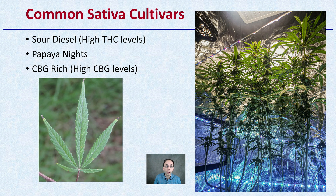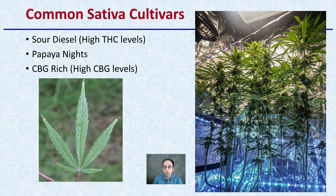If you're wondering what are some common sativa cultivars — well, there are many; it's an extensive list. One is high in THC, but Sour Diesel is very common and famous on the East Coast of the United States, as well as many others. A quick list of three common sativa cultivars has been provided to help you understand ones that fall into this classification.